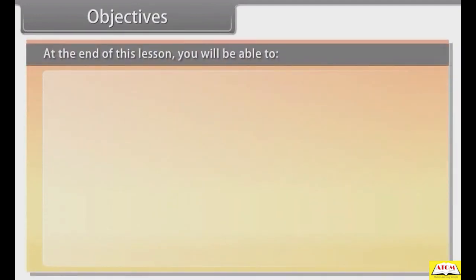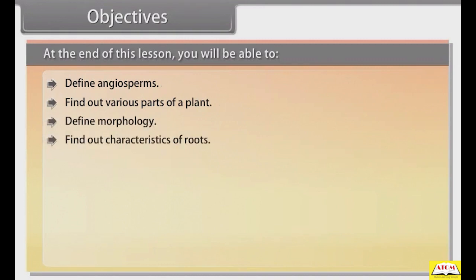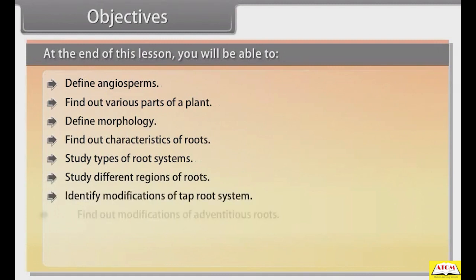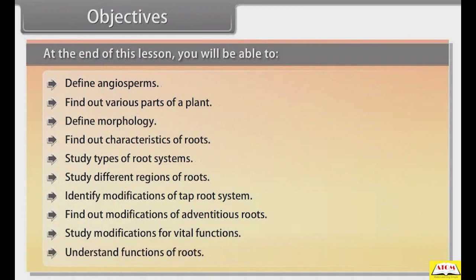At the end of this lesson you will be able to define angiosperms, find out various parts of a plant, define morphology, find out characteristics of roots, study types of root systems, study different regions of roots, identify modifications of tap root systems, find out modifications of adventitious roots, study modifications for vital functions, and understand functions of roots.